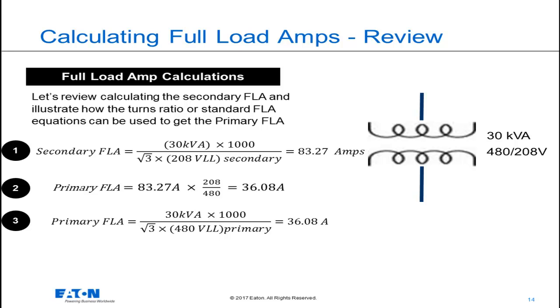We can calculate the secondary full load amps as shown in equation 1. That full load amps is 83.27 amps. So I'm now going to calculate the primary full load amps, and I'm going to do that two ways.